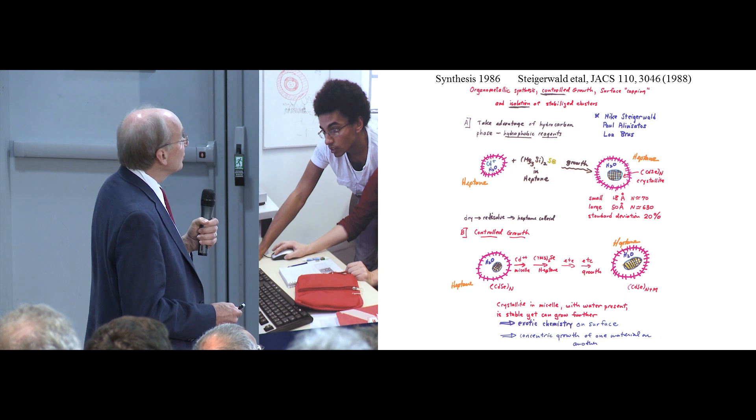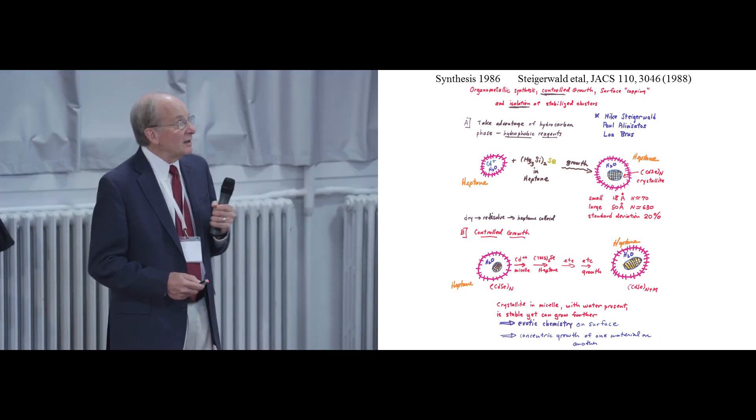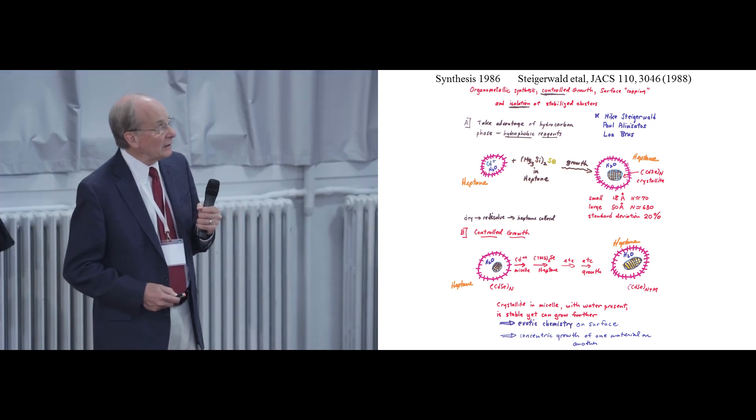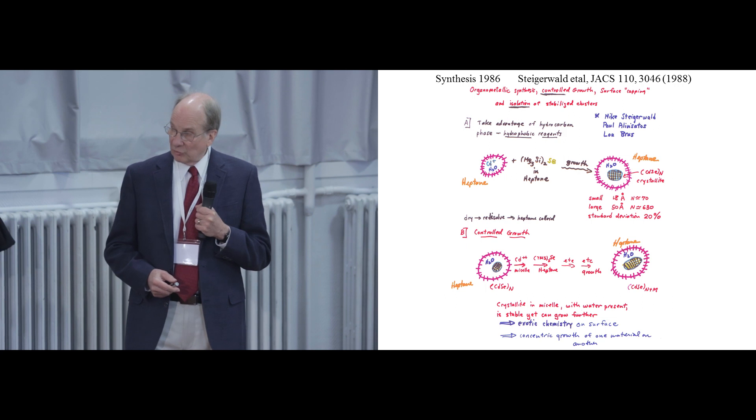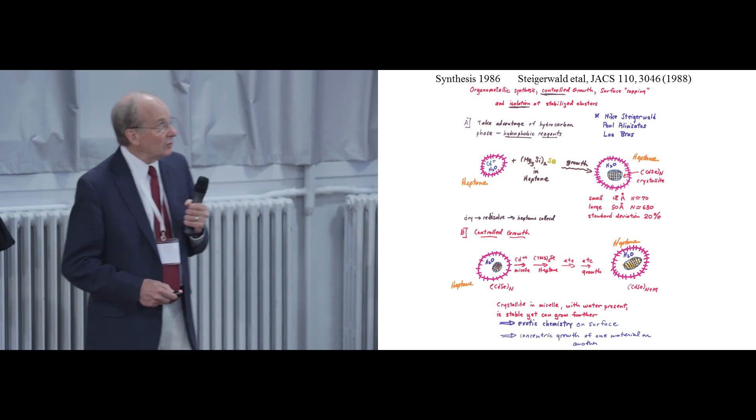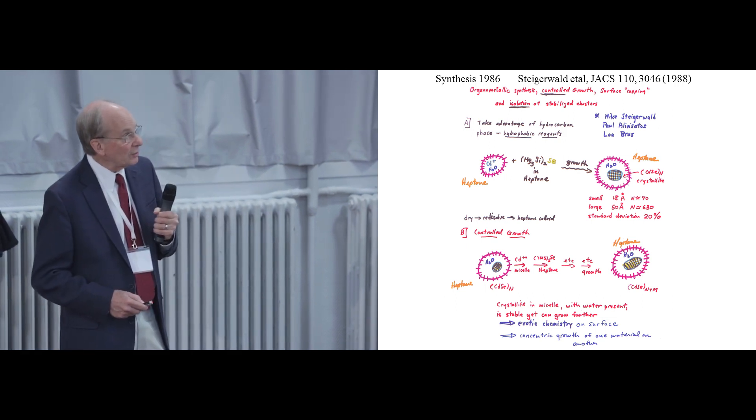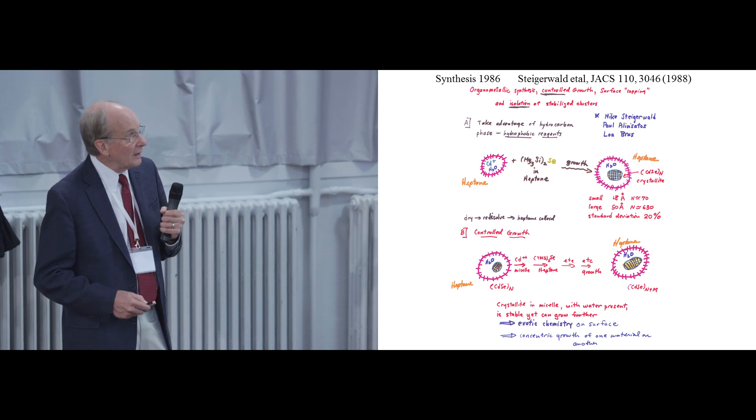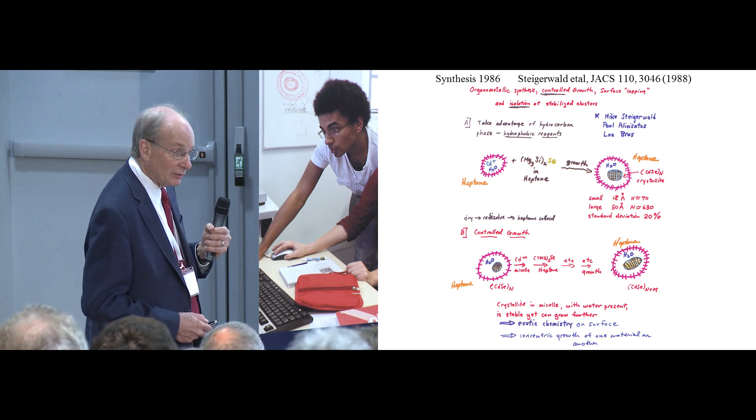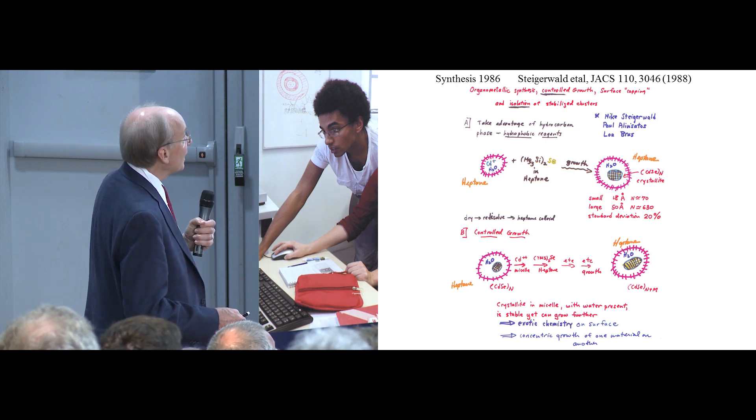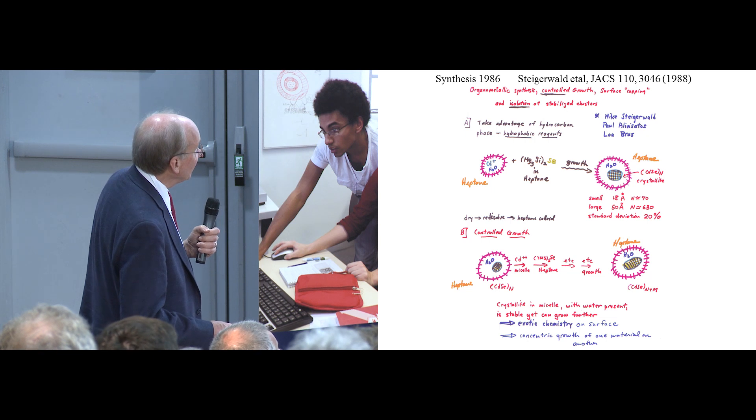Then we figured out at one point that if we added reagents very slowly, they would grow on particles that already existed, but they would not nucleate any new particles. And so you could have controlled growth, so you could start with small particles and then grow them larger. That meant that these surfaces were still reactive inside the particles like that. Take optical spectra as a function of size as the things were growing.